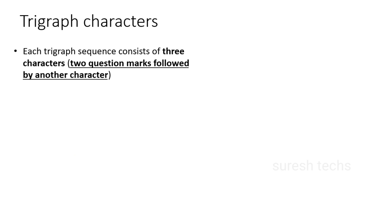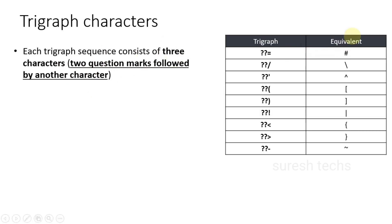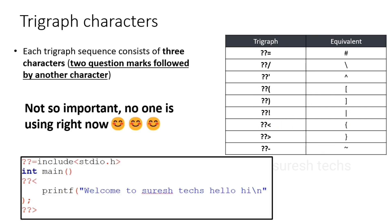Now we will try tri-graph sequences. In every tri-graph sequence we have three characters: two question marks followed by another character. That makes up a tri-graph sequence.